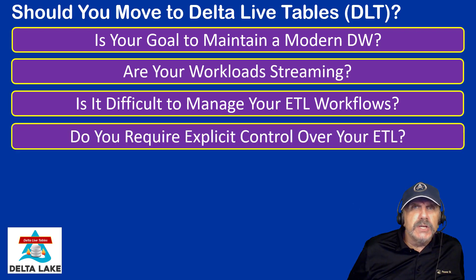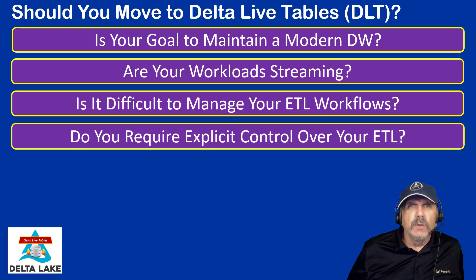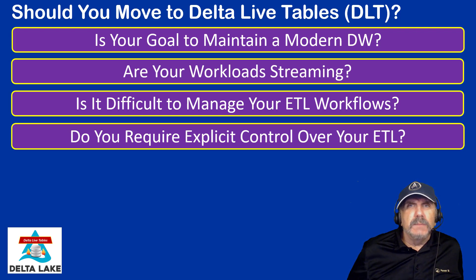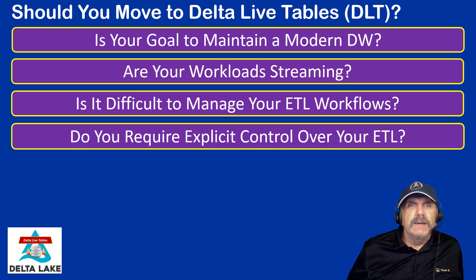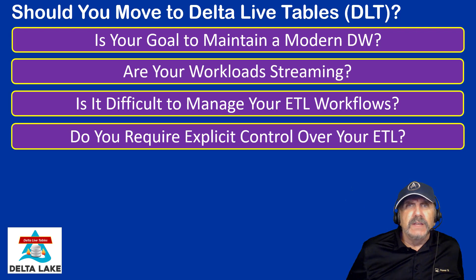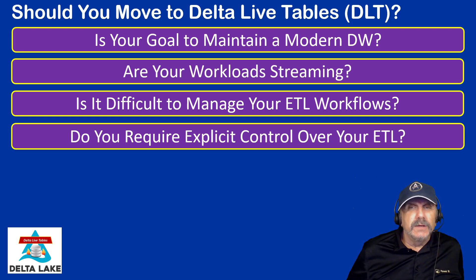Do you require explicit control over your ETL? This is a really fundamental question for DLT because DLT is a declarative framework. Declarative means you simply state what you want — the outcome, not how to get there. You are not controlling it procedurally. With traditional data transformations, you write the code, run it procedurally, step one, step two, and control everything. With DLT you do not have that kind of control. Databricks themselves tell you not to try to take procedural control, because DLT is an intelligent service that will do the work for you — if you're ready to let it.